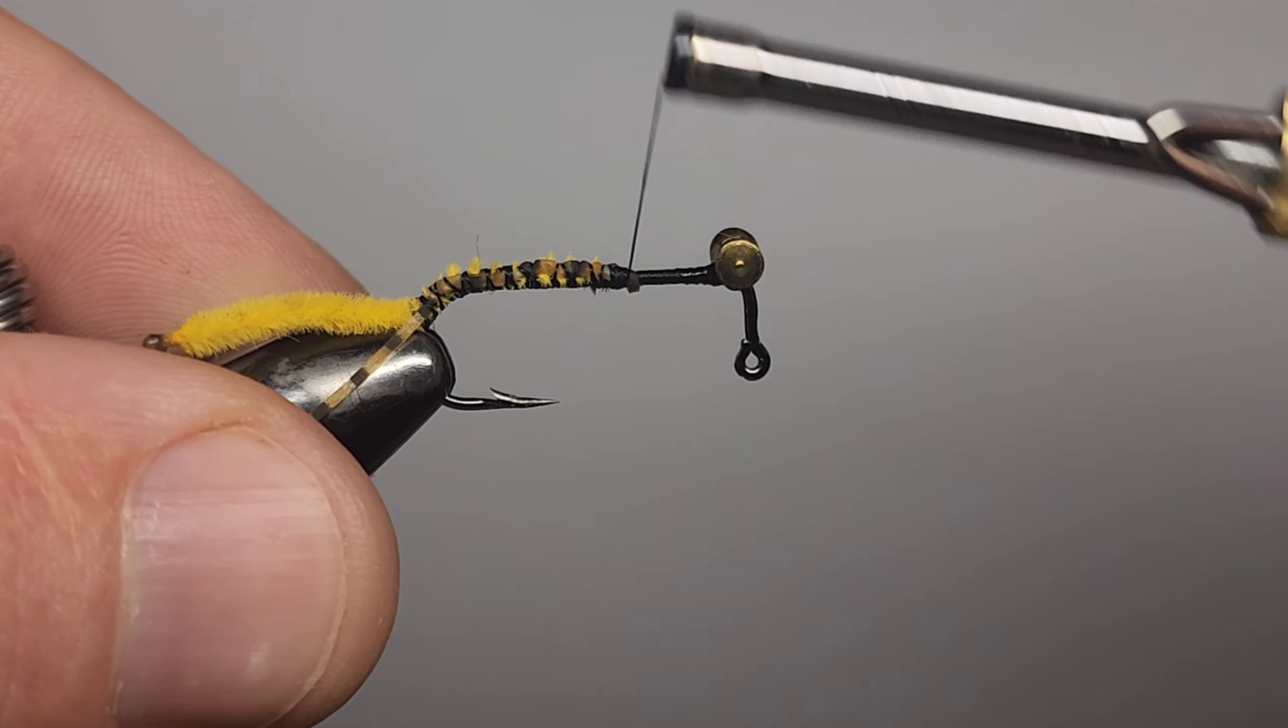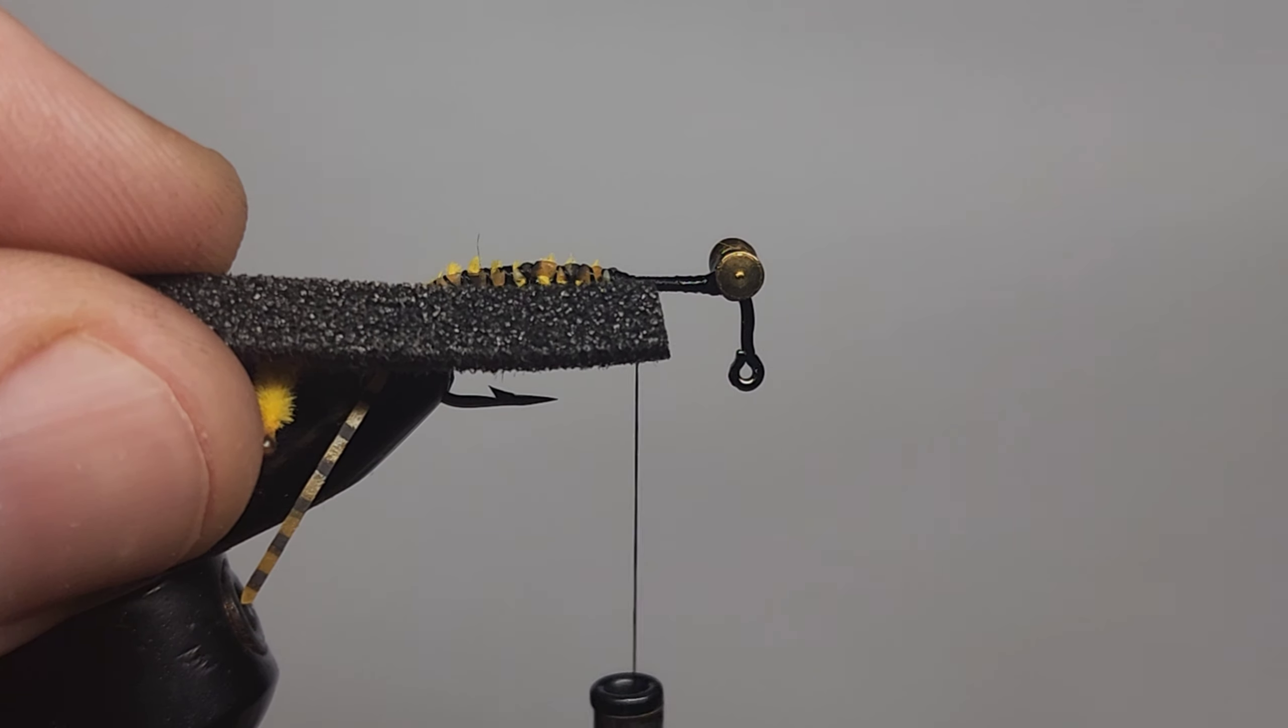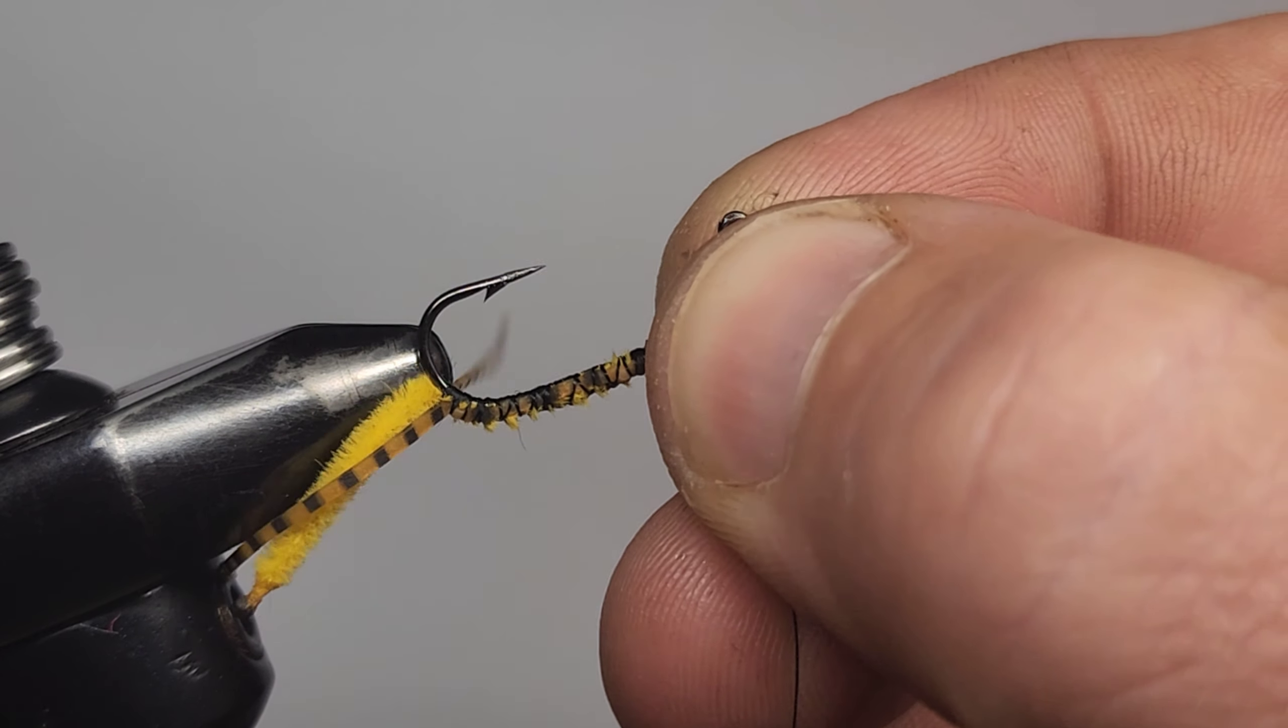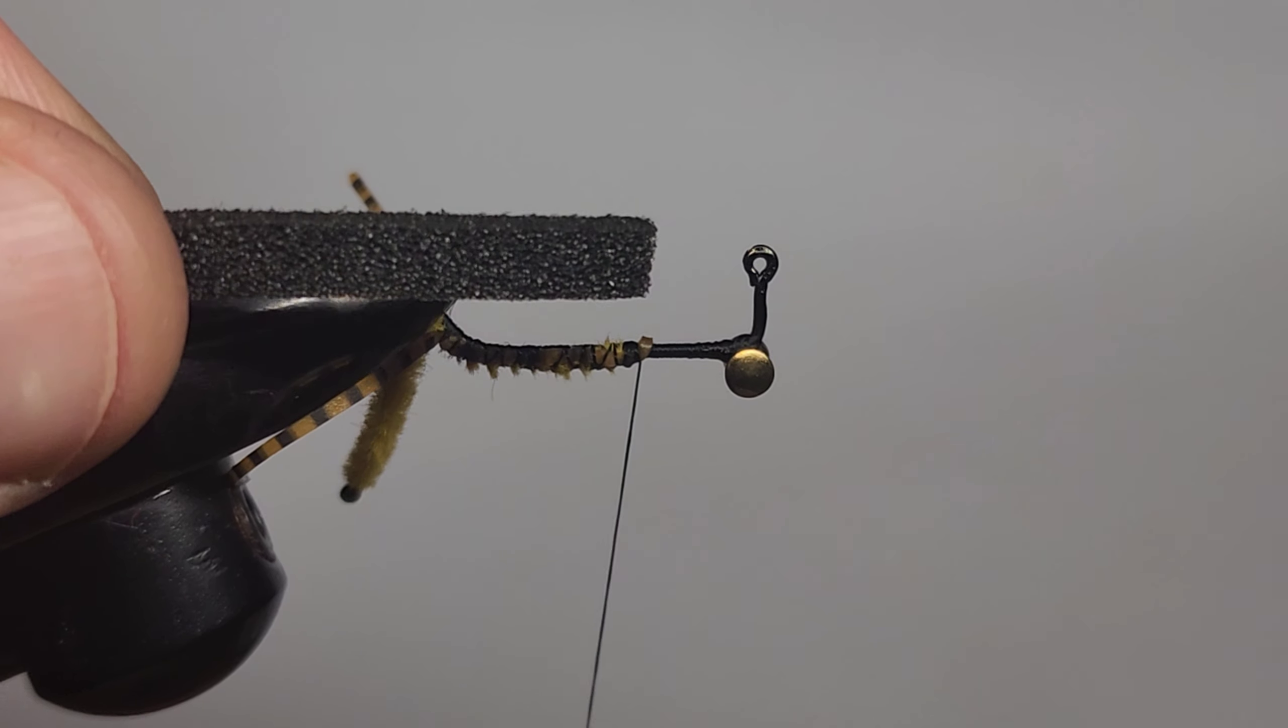Very good. Okay. The next piece we're going to put in is a piece of foam. Before we do that, we're going to turn our hook over. Grab our hook. Turn it over.